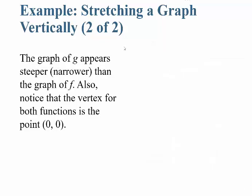So what does this mean in terms of graphing? The graph of g appears steeper or narrower — think of it as the graph looks skinnier — than the graph of f. Also notice that the vertex, the turning point of the graph, is the origin for both functions.